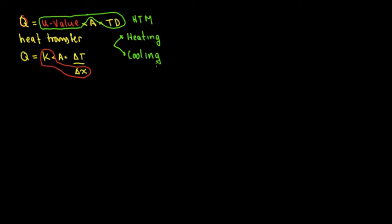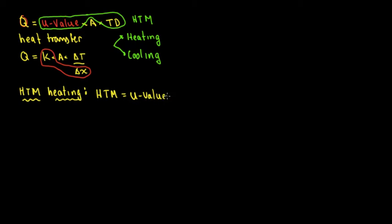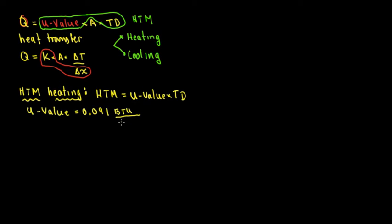Let's continue with this calculation. The heat transfer multiplier for heating is pretty much the same equation: heat transfer multiplier equals the U value times TD. For example, the U value depends on the construction. If the U value equals 0.091, the units are BTUs divided by hour, square feet, and Fahrenheit.